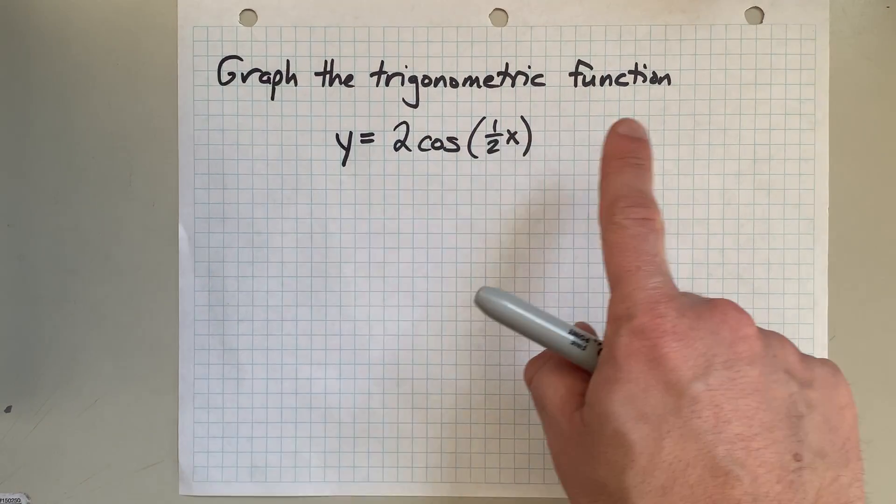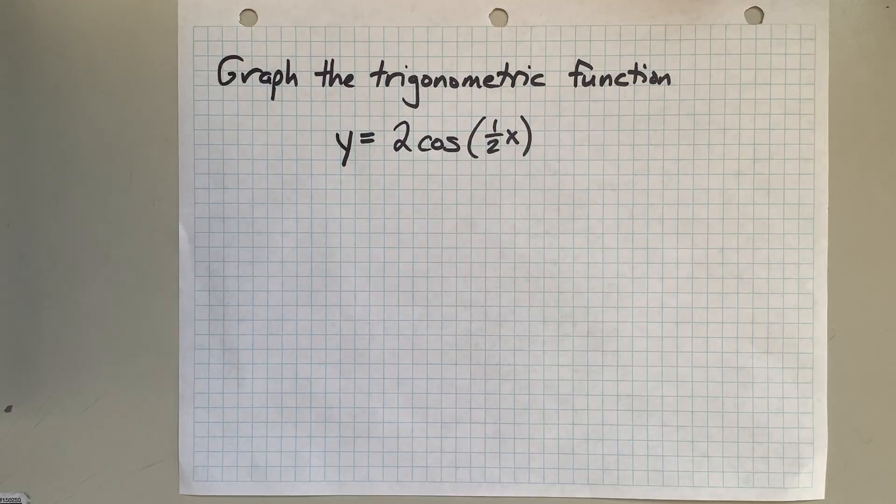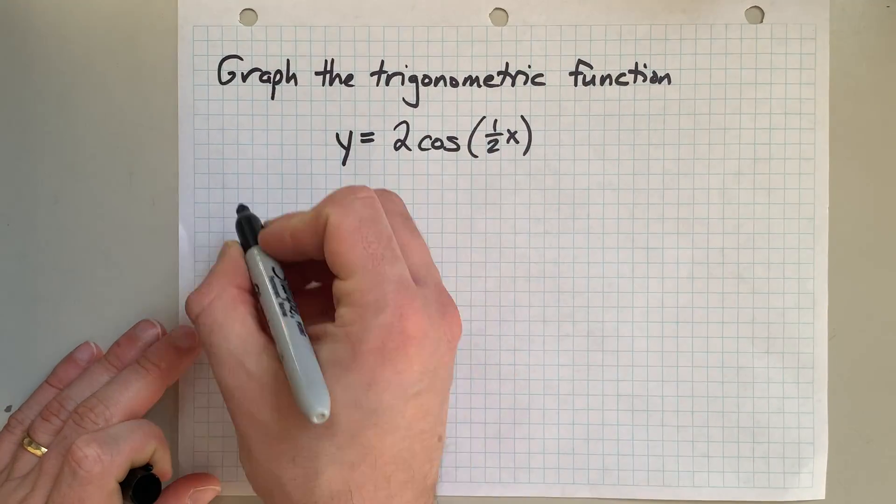We're going to graph the trigonometric function y equals 2 cos of 1 half x. I'm going to use a table of values.